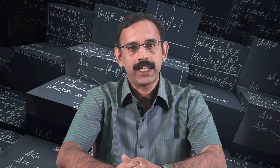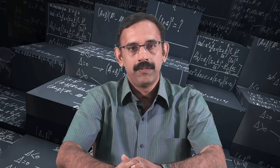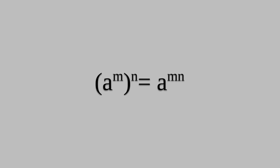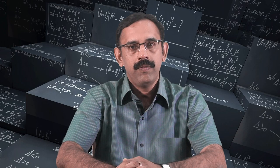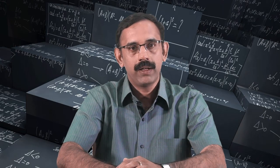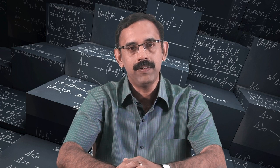We also know other laws of exponents: a raised to m divided by a raised to n is equal to a raised to m minus n, where m is greater than n. And a raised to m, whole raised to n, is equal to a raised to mn. Will these same laws of exponents work when m and n are negative integers?